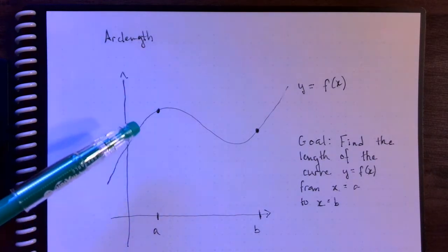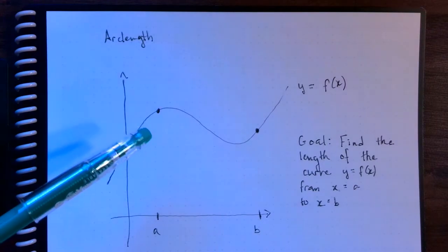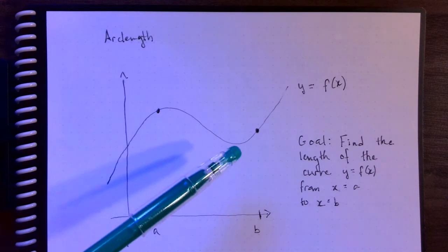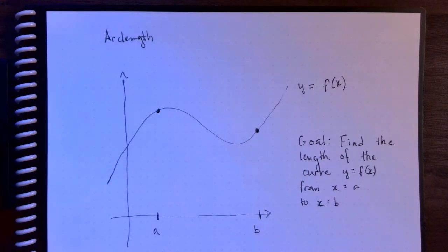Now, the problem with this is that we are very good at measuring straight line distances, not so great at measuring curved distances. So this is going to be our strategy.